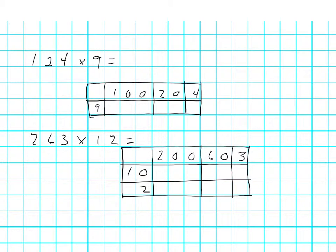We have here two problems and we've got 124 times 9 and you can see that in the grid method you have to expand the number into the hundreds, tens, and the units.